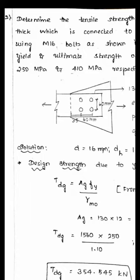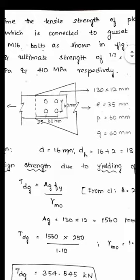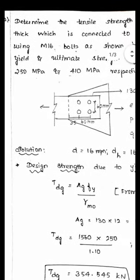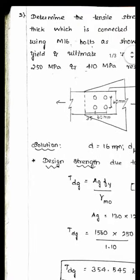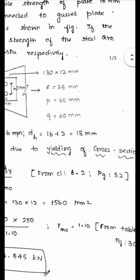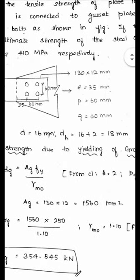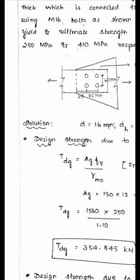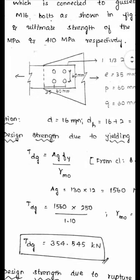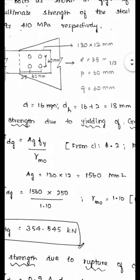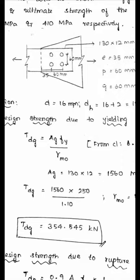The next problem is the tension member. Determine the tensile strength of the plate 10 mm thick which is connected to gusset plate using M16 bolts as shown in figure. The plate size is given as 130 by 12 mm. It was connected by using 4 bolts of 16 mm diameter. The pitch as well as the edge distance is marked as 60 mm, and the end distance is given as 35 mm. If the yield and ultimate strength of the steel are 250 MPa and 410 MPa respectively, even if not given, you have to consider these values.